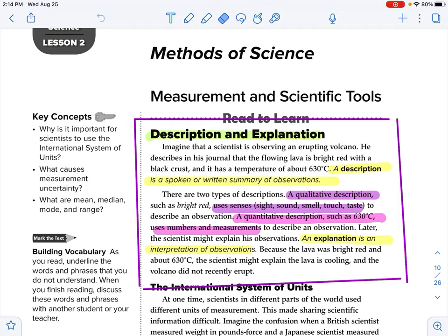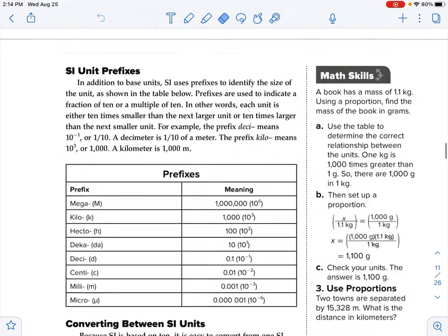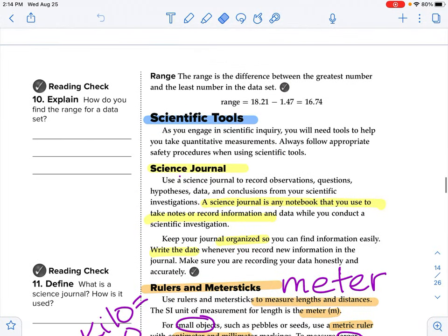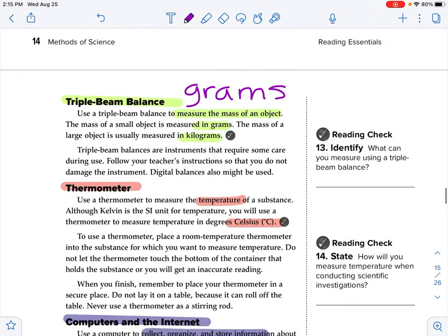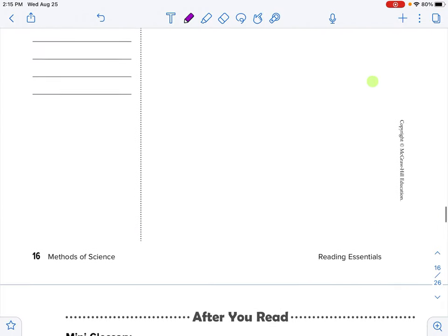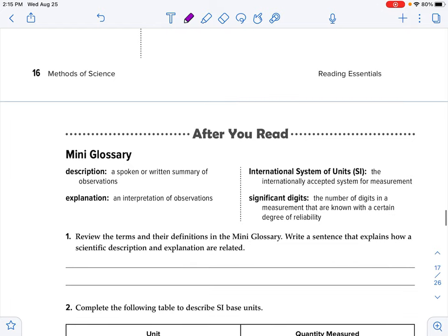So you'll notice that this purple square, this is what we are going to read. So I would like you to highlight that description and explanation in green, please. And then we're going to scroll through this for now. And then we are going to highlight this scientific tools in blue. And then we're going to come down here and tools used by earth scientists. Let's go ahead and highlight that orange.